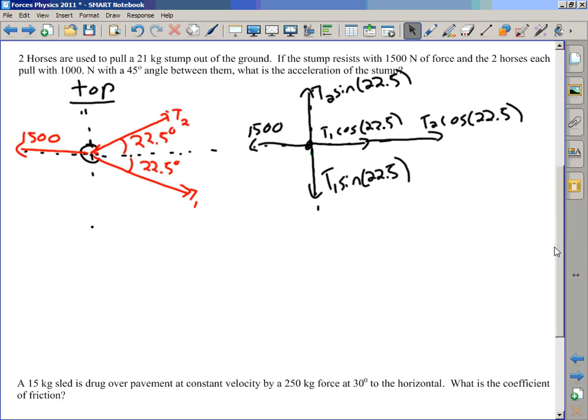Two horses pull 21kg stump out of the ground. Stump resists 1500 newtons. Two horses each pull at 1000. It's 45 angles between them. What's the acceleration?